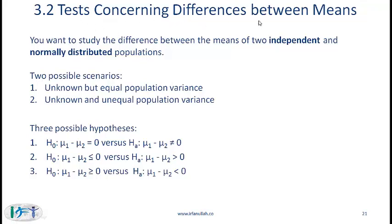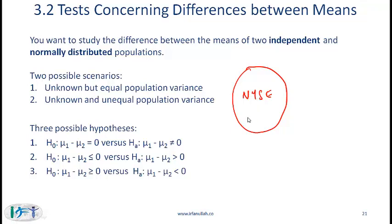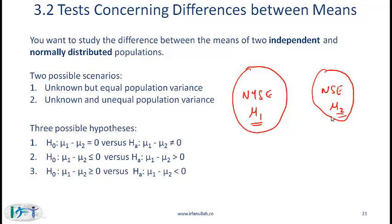Tests concerning differences between means. Let's say you want to study the difference between the means of two independent and normally distributed populations. Take an example: one population is the returns on all stocks on the New York Stock Exchange with mean mu1, and the other population is the returns on all stocks on the National Stock Exchange in India with mean mu2. You want to determine whether mu1 and mu2 are the same or different.